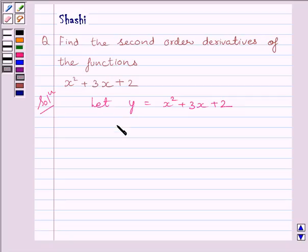Now differentiating both sides with respect to x, we get dy upon dx is equal to 2x plus 3.